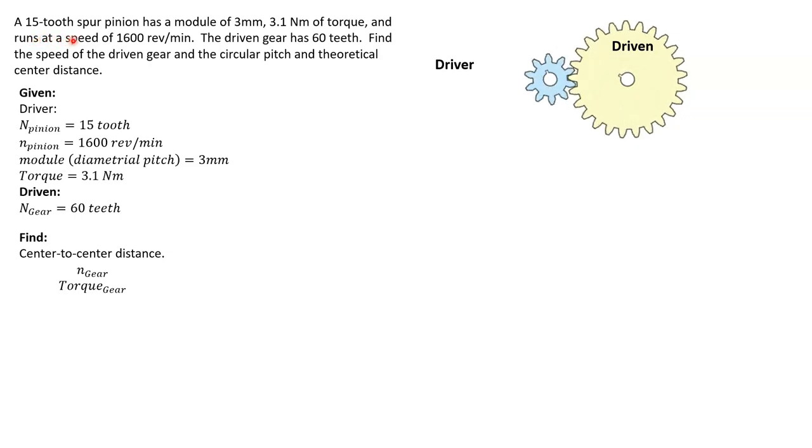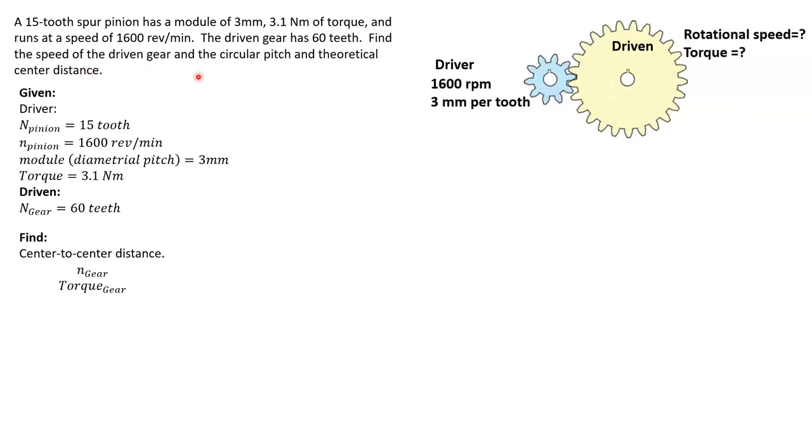And it runs at a speed of 1600 rpm. The driven gear is the bigger gear, 15 versus 60 teeth. Find the speed of the driven gear, the circular pitch, and theoretical center distance. Looking at the information, we have 1600 rpm on the input.